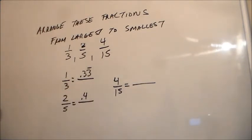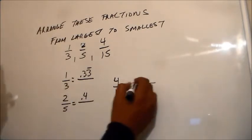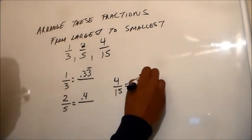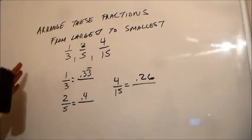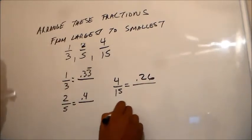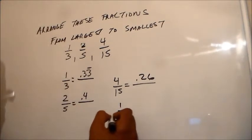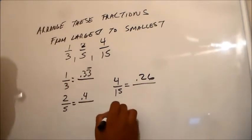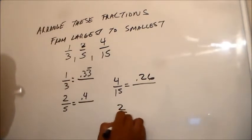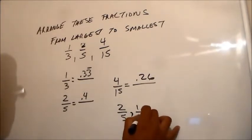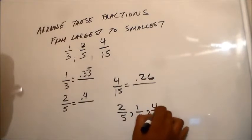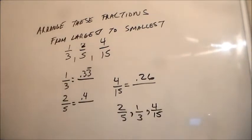Last but not least, four divided by fifteen — I called that around twenty-five to twenty-six percent, so 0.26. So the order from largest to smallest would be two-fifths, one-third — that's a comma — and then four-fifteenths.